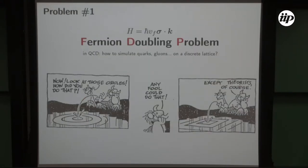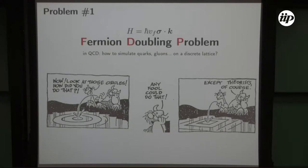What is the fermion doubling problem? If you are a theoretician and you look at nature, it seems very simple — sigma·k, how hard can it be? It's the simplest Hamiltonian, but when you try to simulate it on a lattice, it breaks. It doesn't work, and you don't even know it doesn't work. This is an old problem already from quarks and gluons on a discrete lattice.